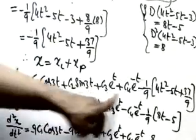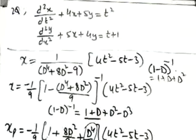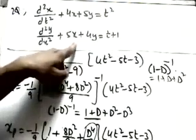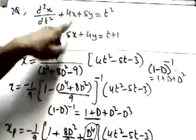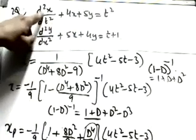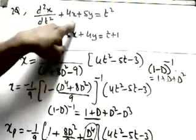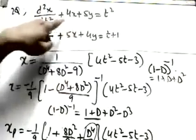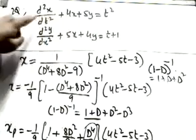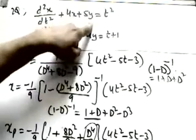We now have xp, so the complete solution is x = xc + xp. To find y, substitute x back into equation 1: we need d²x/dt². Differentiating x twice and substituting into equation 1 rearranged as 5y = t² − D²x − 4x, we can solve for y.